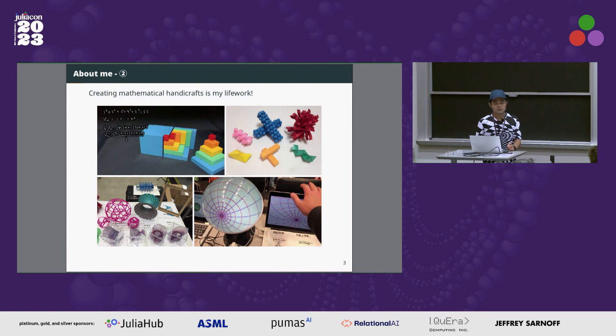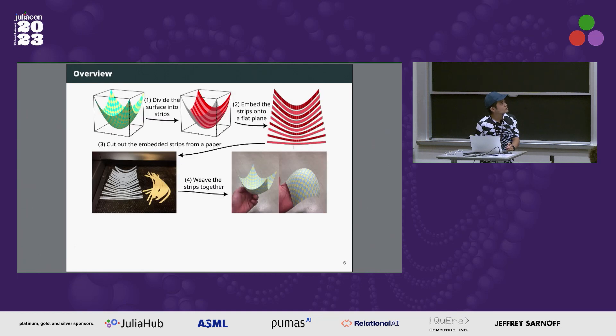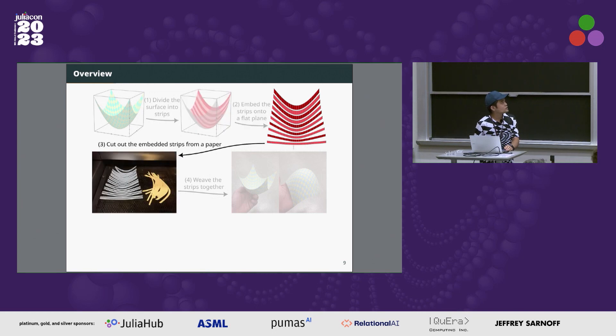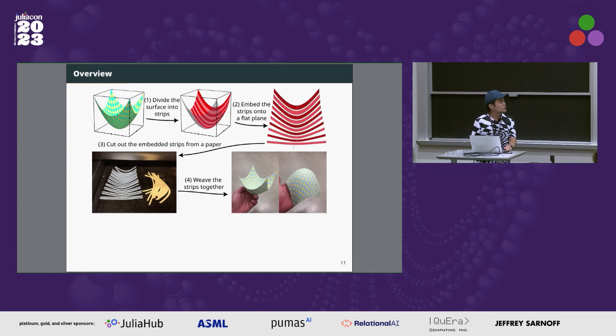Let's start with the overview of the project. There are four steps to create a smooth surface model. First, divide the target surface into strips. Second, embed curved strips onto a flat plane. Step three, cut out the embedded strips from a flat material such as paper. And the last step, weave the strips together and obtain a smooth surface.